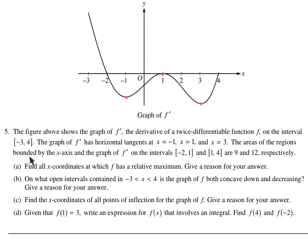The area of the regions bounded by the x-axis and f prime on intervals negative 2 to 1, and 1 to 4, are 9 and 12 respectively. So this area is 9, and this is 12. One thing they're not saying is whether it should be negative 9 and negative 12 — because they're under the x-axis. So if you were integrating it on that interval, it would be a negative area. They didn't say that.